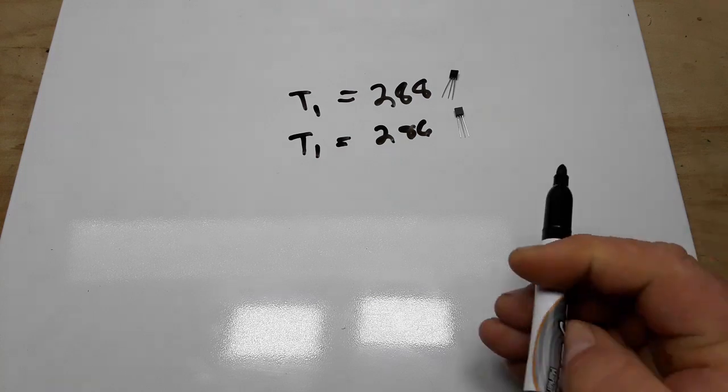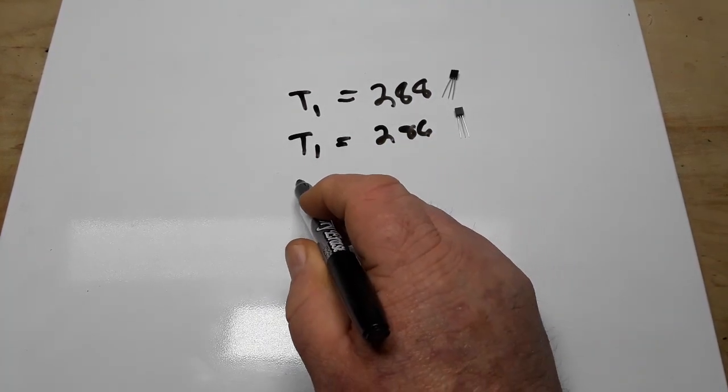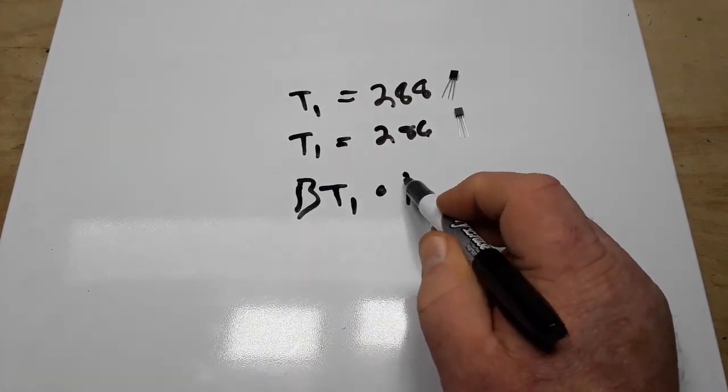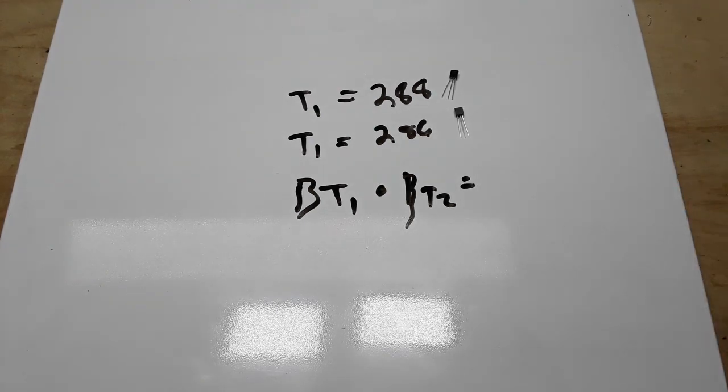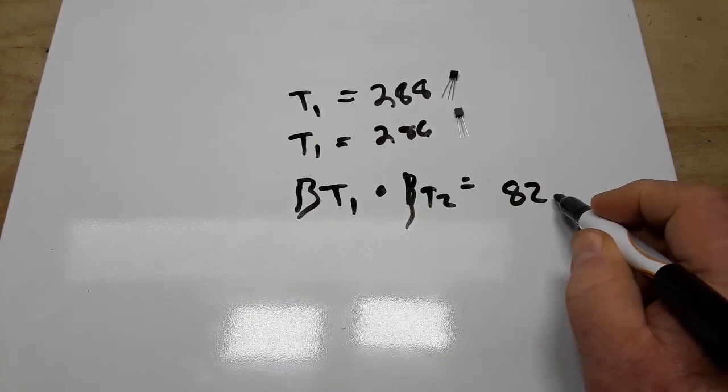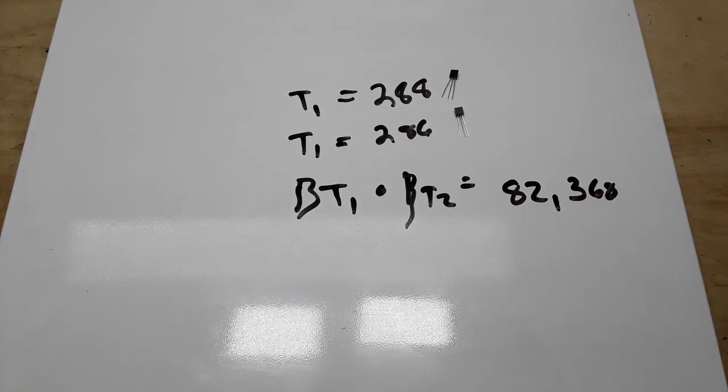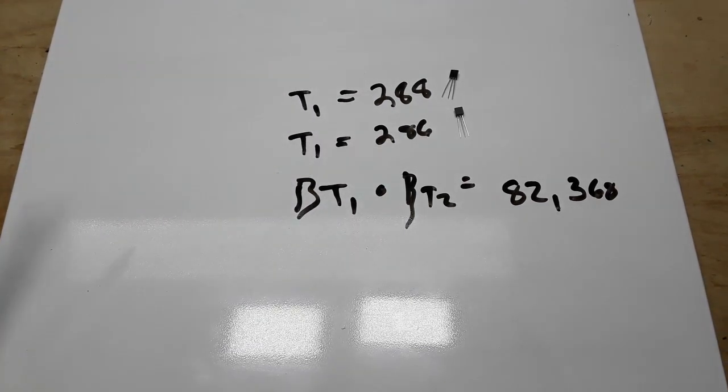So to find our Darlington gain, or our super beta, it's simply beta T1 times beta T2. And that is going to give us our new beta of 82,368. So you can see the exponential growth we've got there.